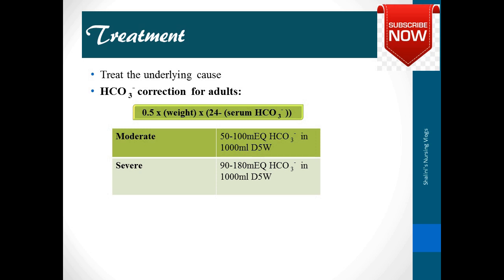Treatment of metabolic acidosis: first, treat the underlying cause, then give bicarbonate intravenously. The formula is 0.5 × weight in kg × (24 - serum bicarbonate level). In moderate cases, give 50 to 100 mEq of bicarbonate in 1000 mL of 5% dextrose. In severe cases, give 90 to 180 mEq of HCO3 in 1000 mL of 5% dextrose.